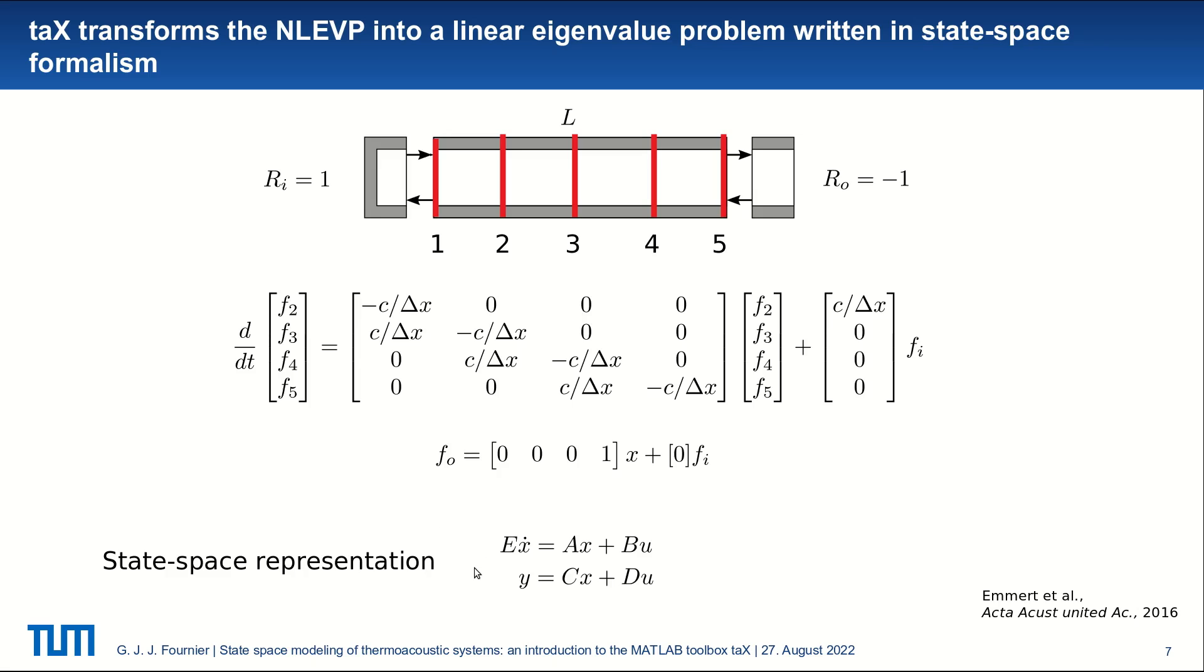So state-space is just a framework to describe systems with two equations. The first one is the state equation, which relates how the state x is evolving in time as a function of its state and the input u. And the output y is related to the state x with the C matrix and to the input u with the throughput matrix d. And the state-space representation of those two equations is similar to a transfer function, for example.